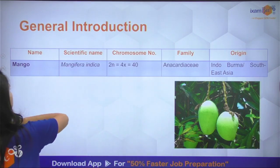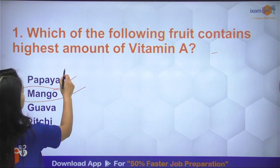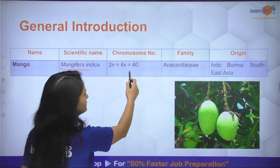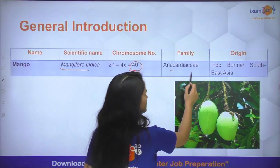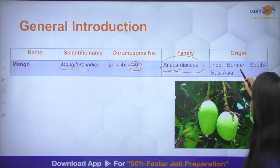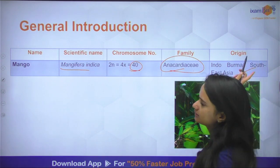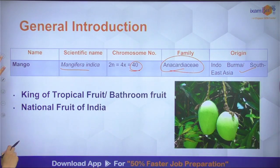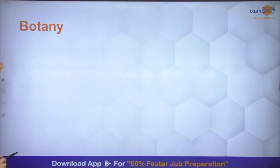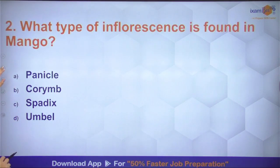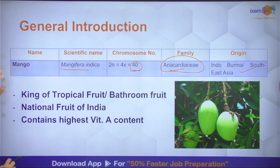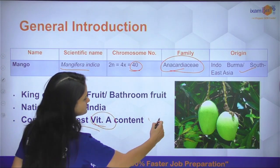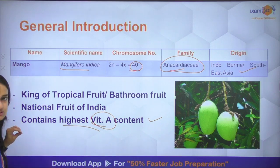Mango के बारे में important facts: इसका scientific name Mangifera indica है, chromosome number 40 है, family Anacardiaceae है। Origin अगर देखें तो Indo-Burma region का है। King of tropical fruits इसे कहते हैं, और highest Vitamin A content इसमें पाया जाता है।